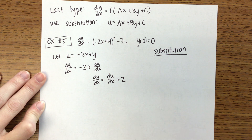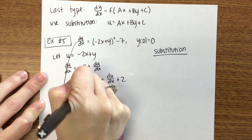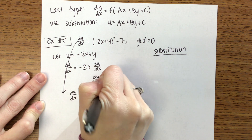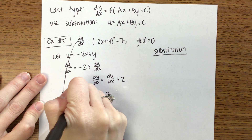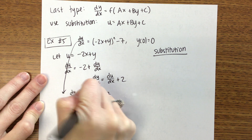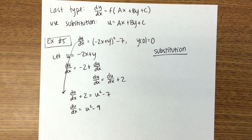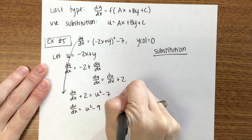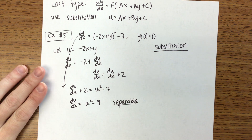Then we go back to the differential equation and substitute in everything. We get du/dx plus 2 equals u squared minus 7. Moving the 2 over, we get du/dx equals u squared minus 9. This is separable — and that will always be the case with this type: once you do your substitution you should end up with a separable equation.